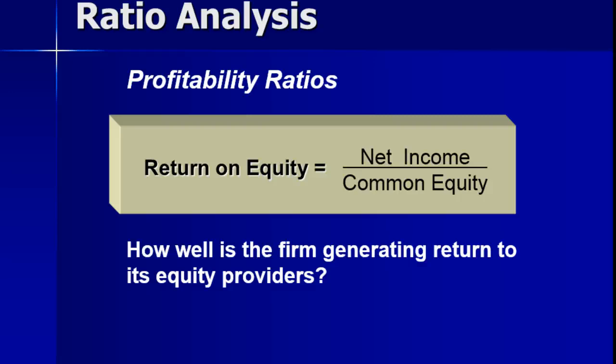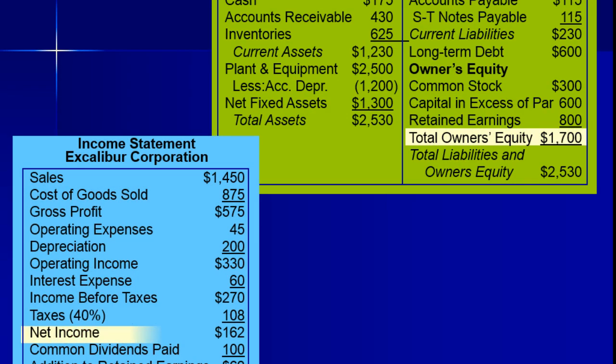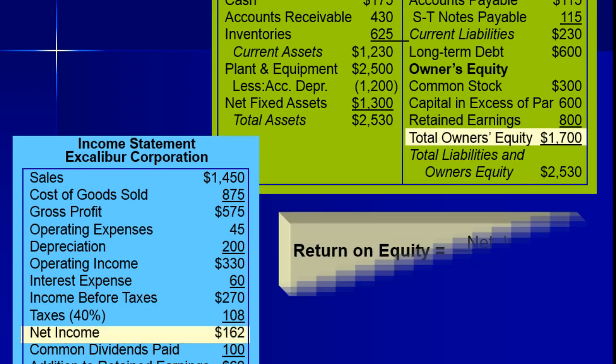As a company pays off their liabilities and debts, they should become more profitable because they're not paying interest on borrowed money. Net income divided by total equity gives you the return on equity.